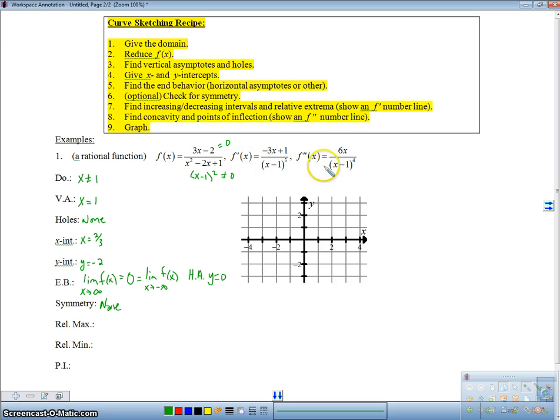First, we're going to take f' and make an f' chart. At 1, I have a vertical asymptote. If I solve this, set equal to 0, I get 1/3 - a critical number. Now I check all the signs. When I put 0 in here, I get negative, then positive, then negative. So f is going to go decreasing, increasing, and then decreasing again.